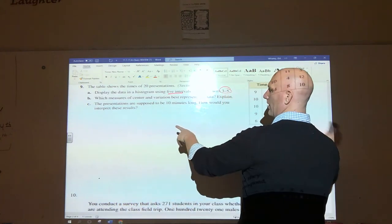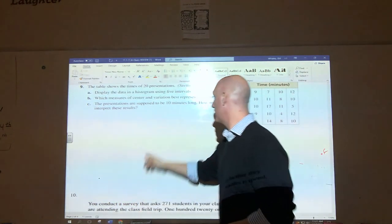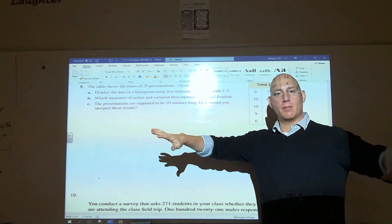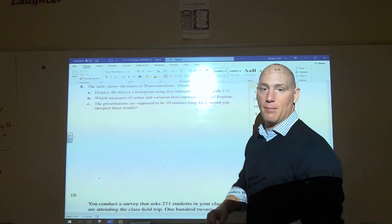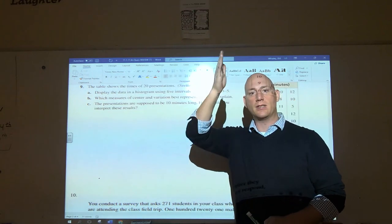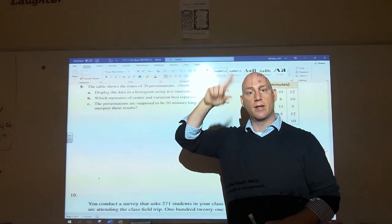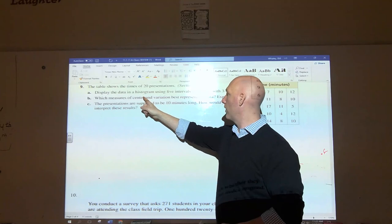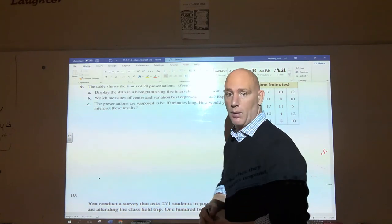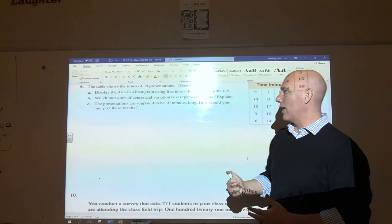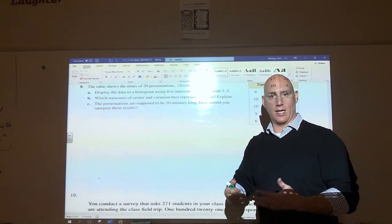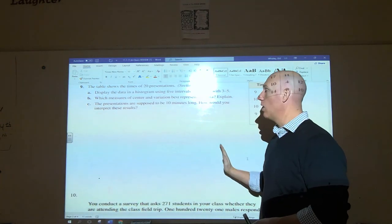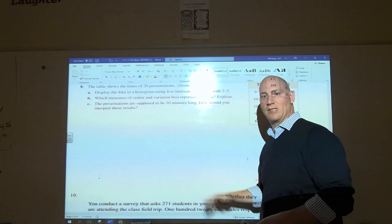Now we called it symmetric. So the presentations are supposed to be 10 minutes long. How would you interpret the results? If it's symmetric, there's no outliers, and when it's symmetric the mean lands in the middle. I shouldn't have erased that, but if you go back and look at it, the mean ends up right in the middle, which is right in between 9 and 11 minutes. So our mean is right at about 10 minutes, which isn't that what the teacher wanted us to do? Give 10 minute presentations. So I would interpret this as most of the kids stayed around the 10 minute mark because it was a symmetric graph, which meant the mean was in the middle. Our mean was at about 10 minutes, so most kids stayed around 10 minutes.